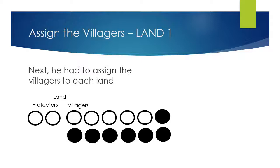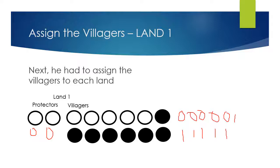Now he had to assign the villagers for land 1. Starting with the land of 00, the villagers begin at binary 000001 and go all the way up to 111111.